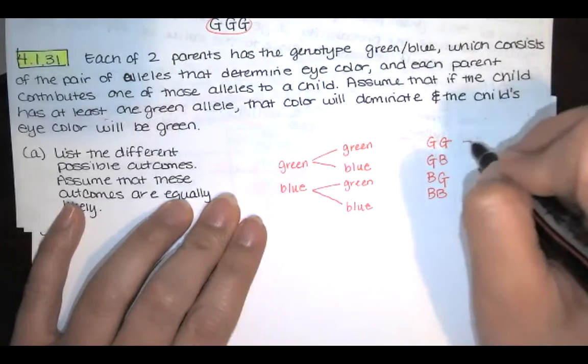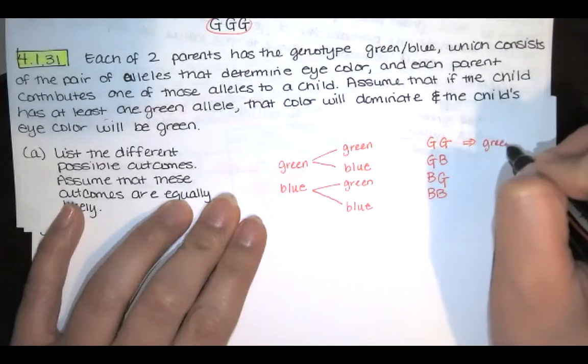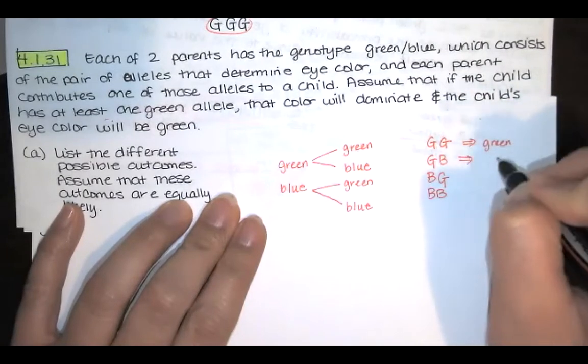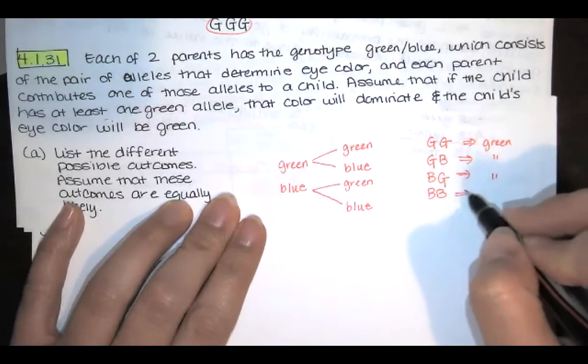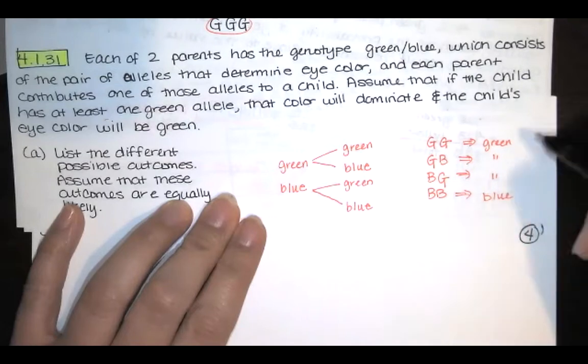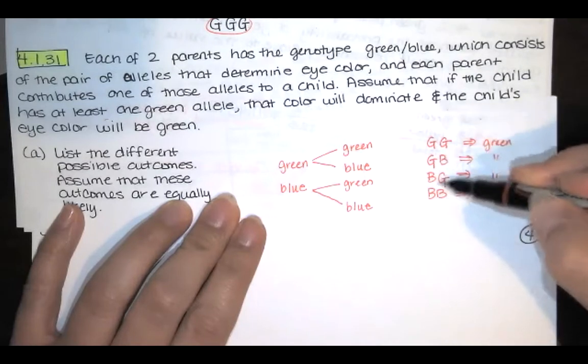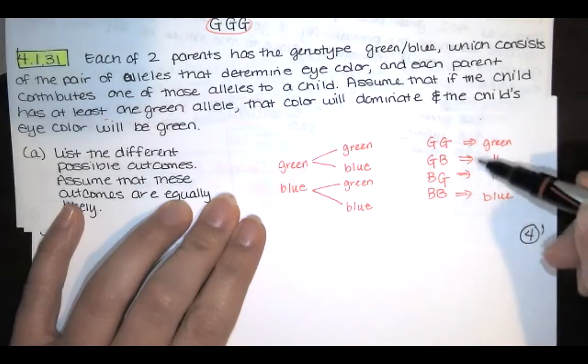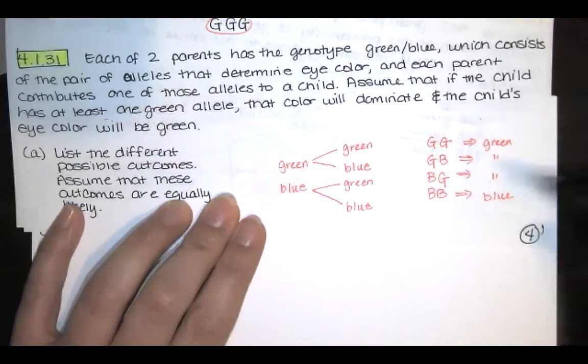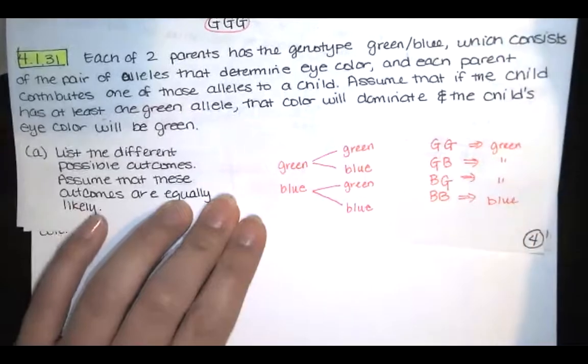So if they have two green alleles, the child's going to have green eyes. One green allele, green eyes. One green allele, green eyes. Only in this case would the child have blue eyes. So in these three cases, the child has green eyes. So three out of four cases, the child would have green eyes.